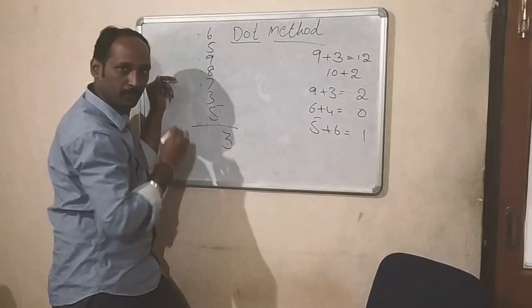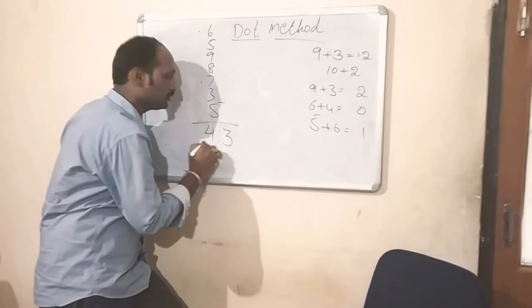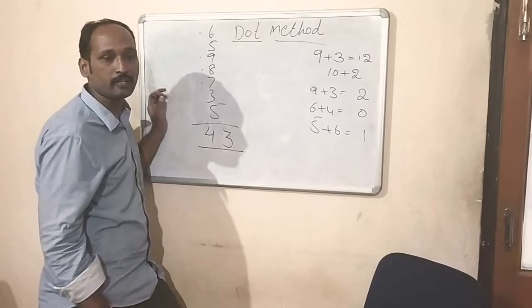Write the 3 in ones place. Write how many dots are there. 4 dots are there. Write the 4 here: 43. This is your answer. This speed we need from you.